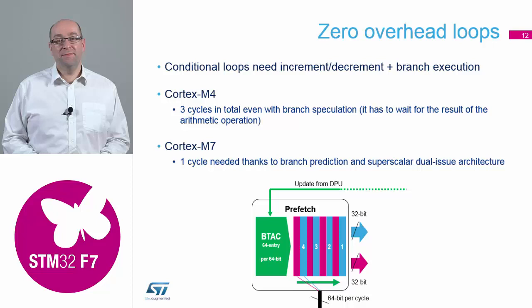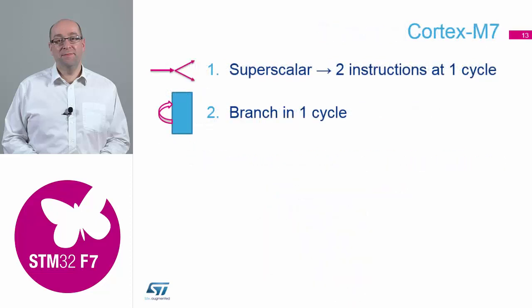Comparing to the Cortex-M4, it used to take about three cycles — and that was with branch speculation enabled. So you've gone from a three-cycle jump to a one-cycle jump. That's quite a big overhead improvement with those two features, really upping the processing performance of the device and bringing it closer to a proper DSP.